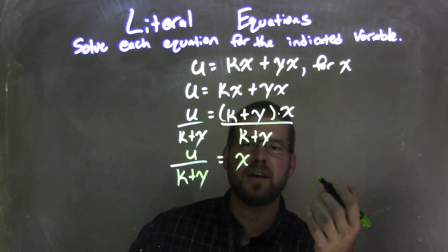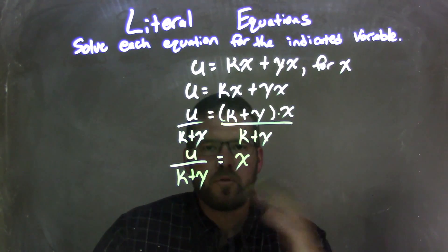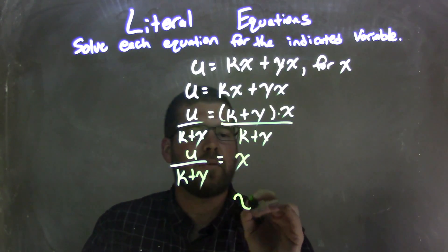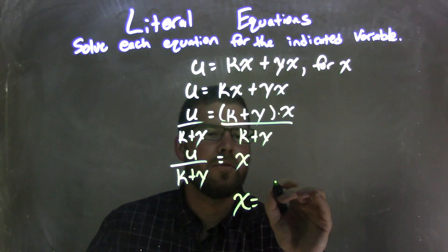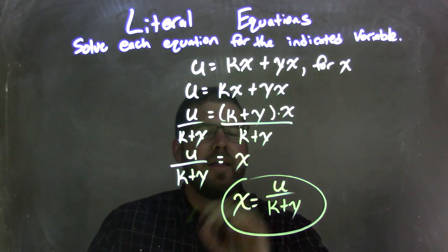x is already isolated by itself now. So my final answer is x equals u over k plus y, and there we go.